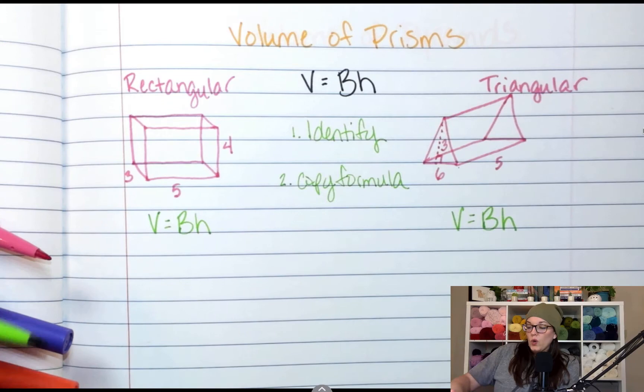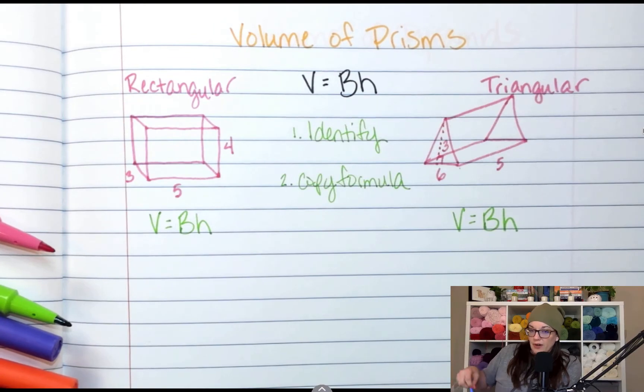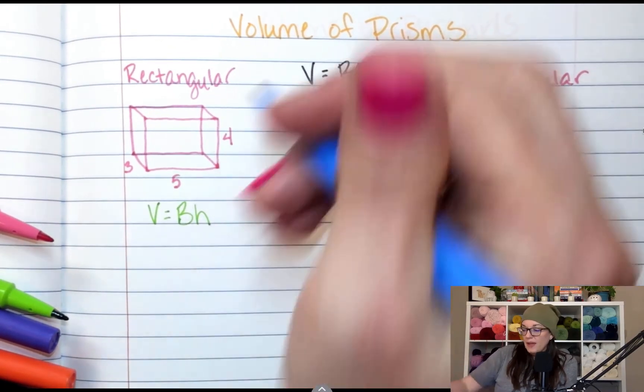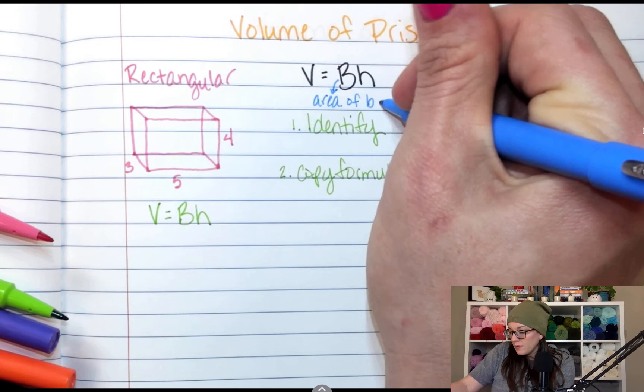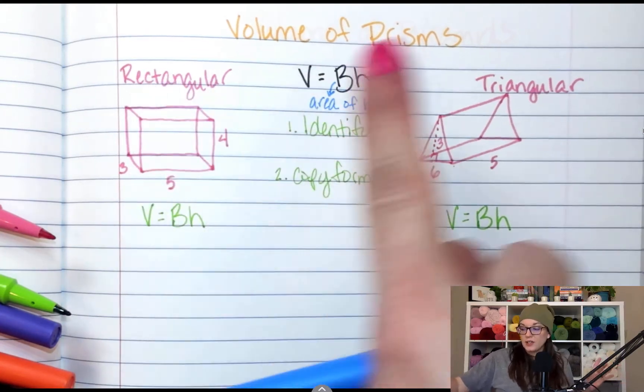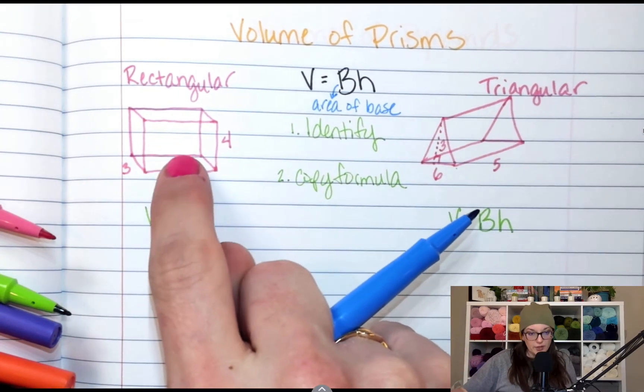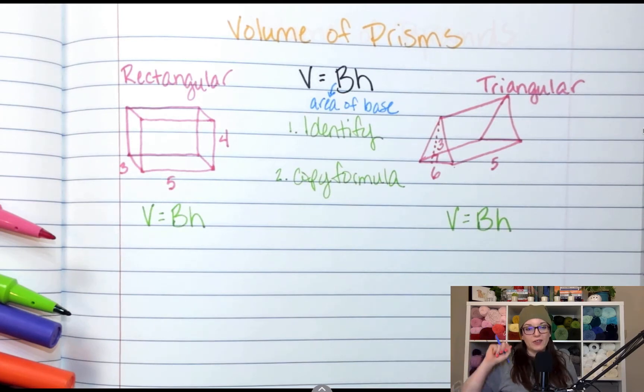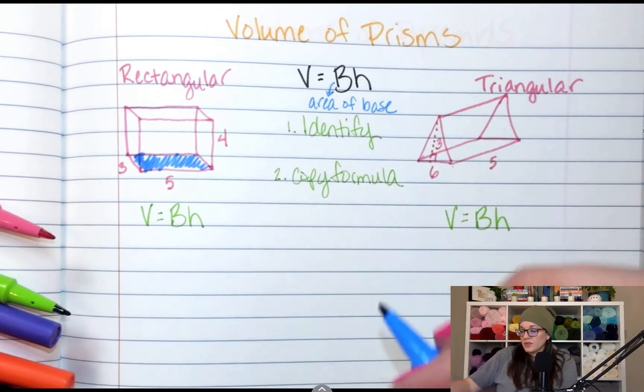Now, once you've copied your formula, we need to talk about what that formula means. The capital B part is the area of the base. Capital B is area of base. Now, remember, when we have our first name, last name shape, rectangular prism, triangular prism, the first name is the shape of the base. So for a rectangular prism, what shape is the base? It is a rectangle. I'm going to shade my rectangle base over here.